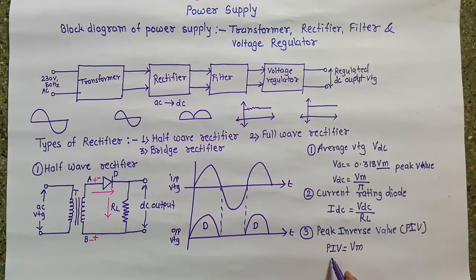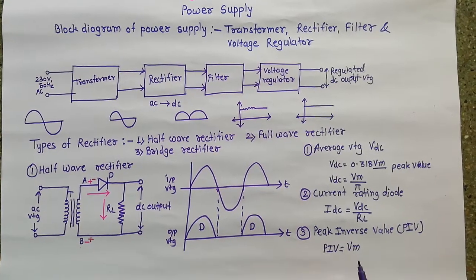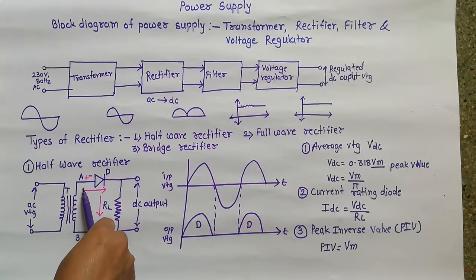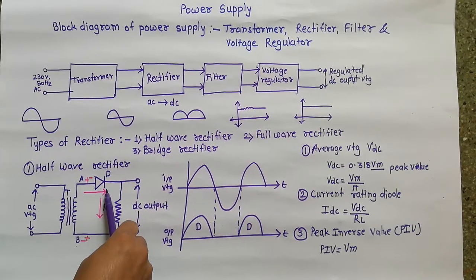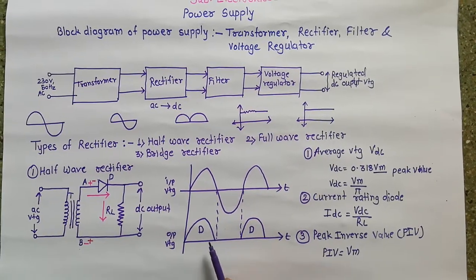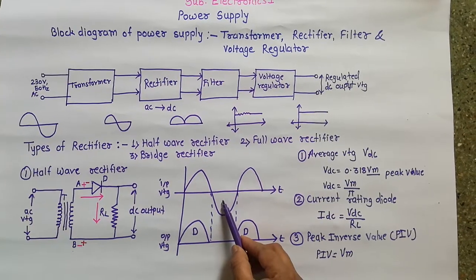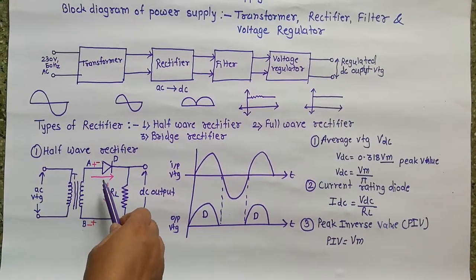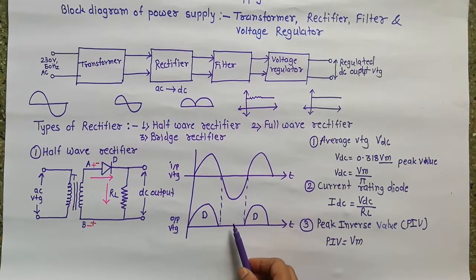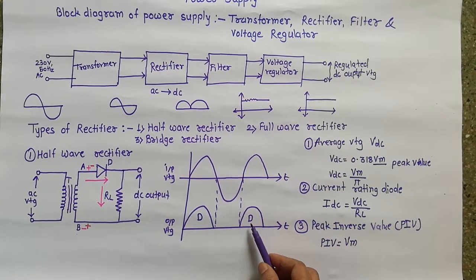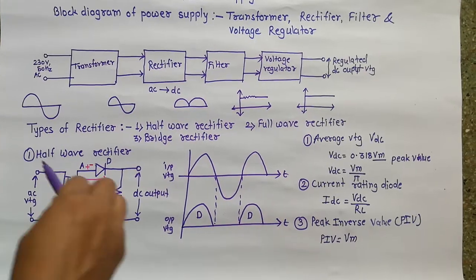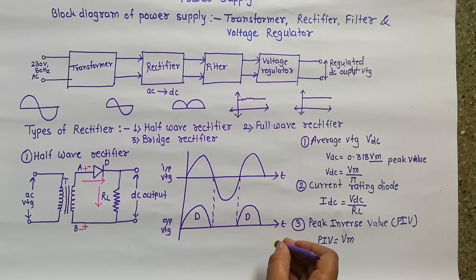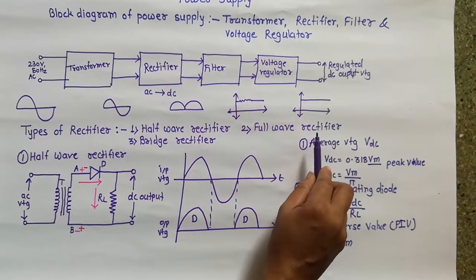So the values for the half wave rectifier are: average voltage VDC = 0.318 Vm, current rating IDC, and peak inverse voltage PIV = Vm. To recap the working: during positive half cycle, end A is positive, diode D is forward biased, current conducts through diode D and RL, and we get a positive half cycle at the output. During negative half cycle, end A is negative, diode D is reverse biased, no current flows, and no output voltage. The half wave rectifier gives a pulsating DC output. Next lecture we study the full wave rectifier.